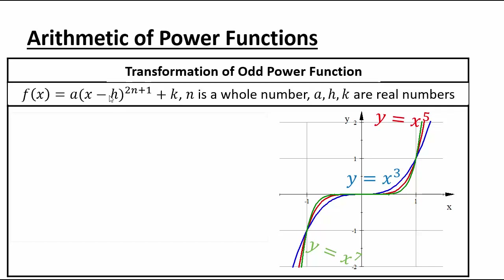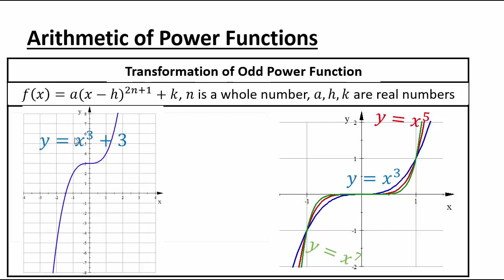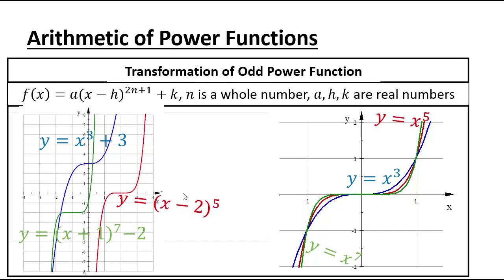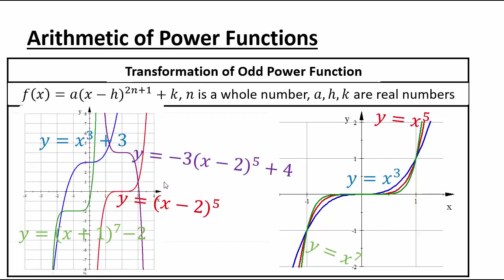h controls horizontal shifts and k controls vertical shifts. For example, x to the 3rd plus 3 is the x cubed graph shifted up 3. x minus 2 to the 5th power is the x to the 5th graph shifted 2 to the right. x plus 1 to the 7th power minus 2 is the same graph as x to the 7th but shifted 1 to the left and 2 down. y equals negative 3 times x minus 2 to the 5th plus 4: x minus 2 to the 5th shifts right 2, negative 3 reflects and stretches vertically, and plus 4 moves it up 4.